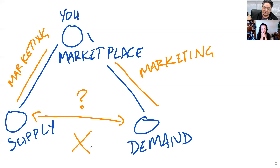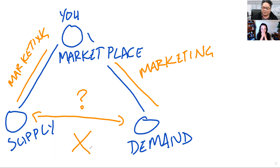Soon they started gaining insights. First, Airbnb required renting an air mattress and being there to serve breakfast. But then someone said, 'I don't want to be here — can I just rent my place out? I've got inventory.' And so they gained all these different insights from that interaction.